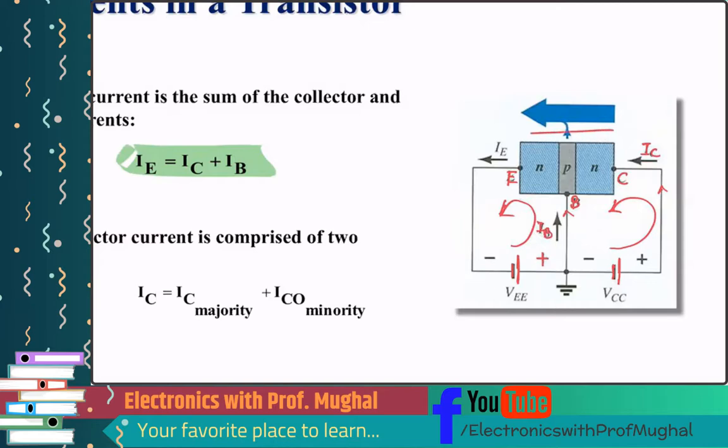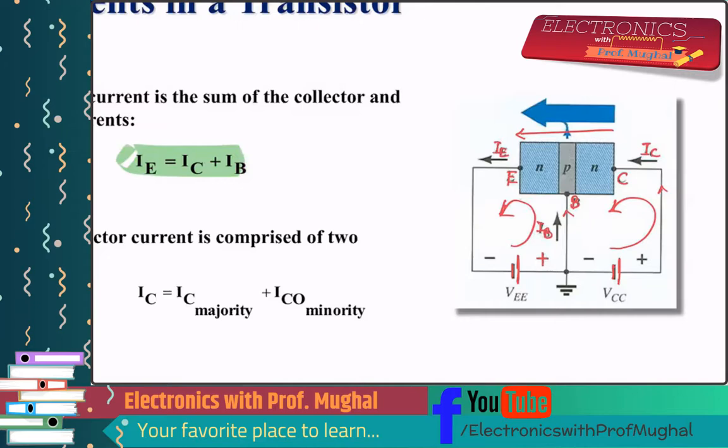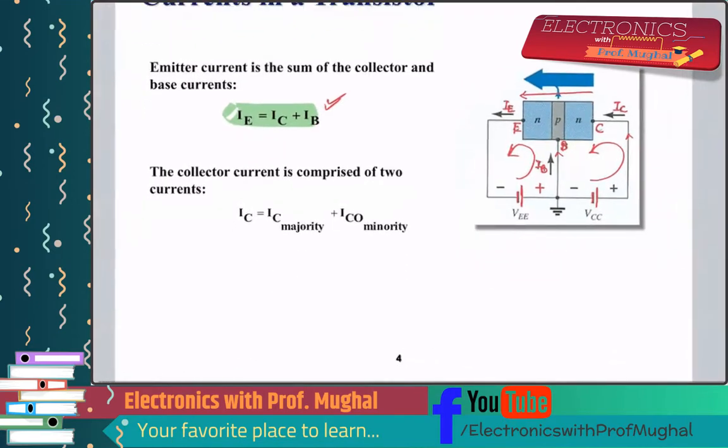So these two currents then merge together and they add up to IE. So that's where we got this equation right here: IE equals IC plus IB. We're simply applying KCL here.